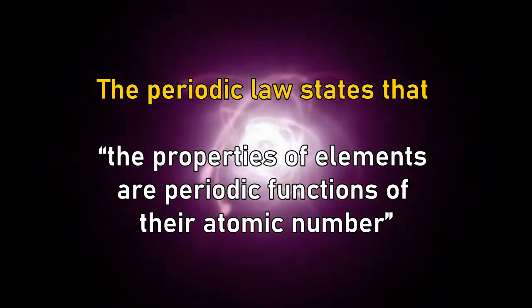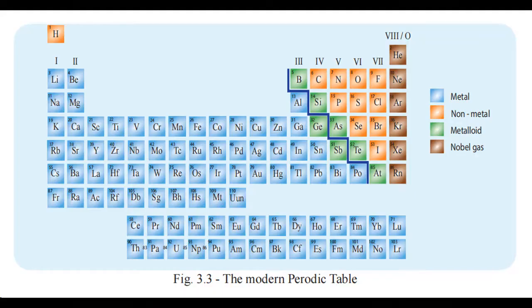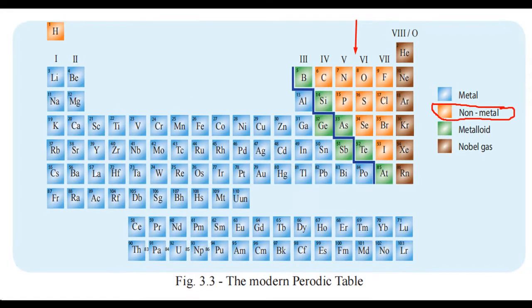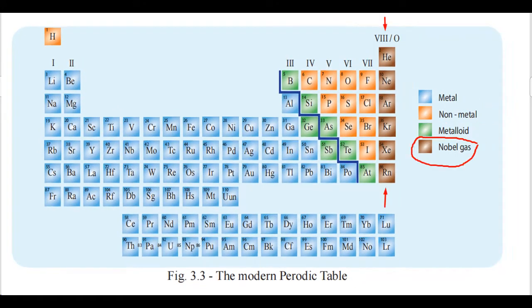What does this mean? This means that when the elements are arranged in the ascending order of their atomic numbers, elements with similar properties recur at regular intervals. For example, metal, non-metal, metalloid, and noble gas are lined up.